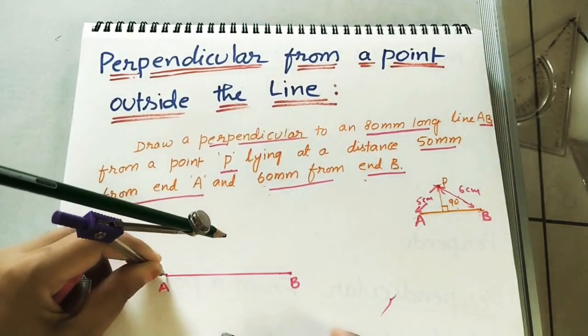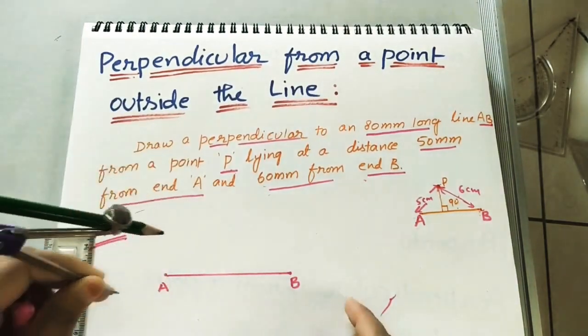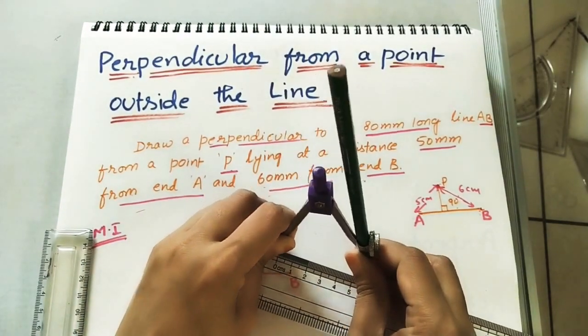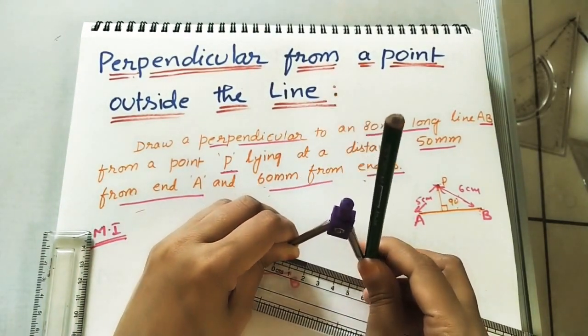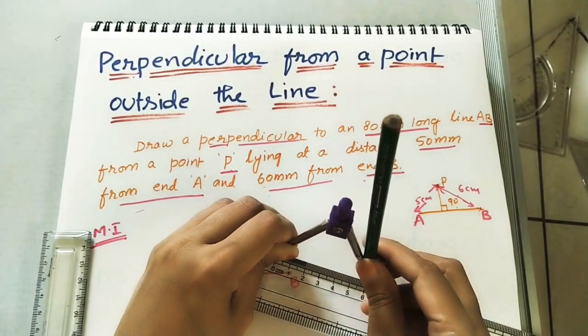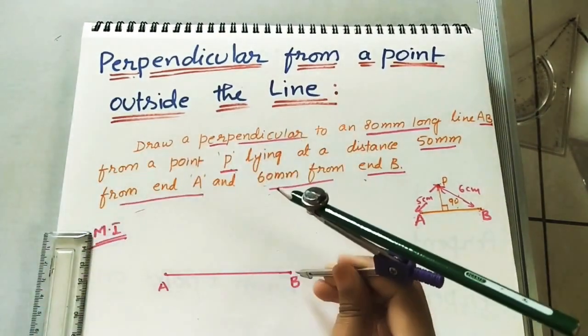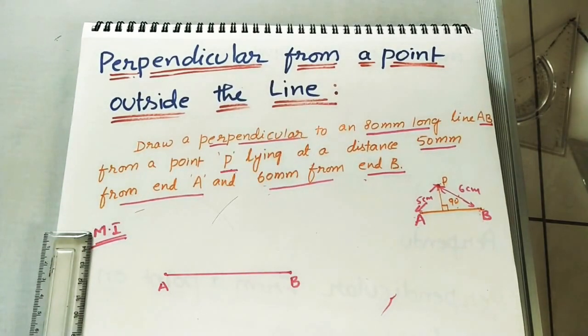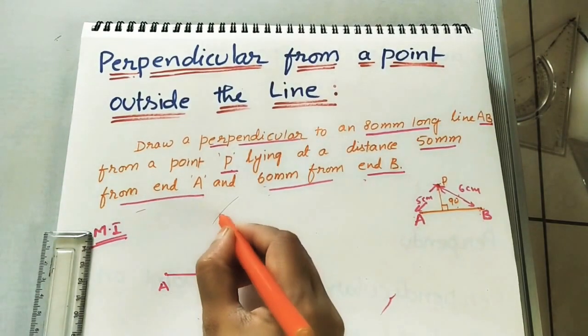From A do an arc. Similarly from B it is 6 cm. From B cut this arc. So the intersection point is P point.